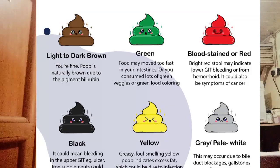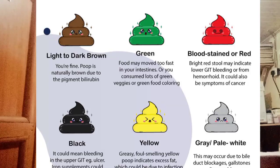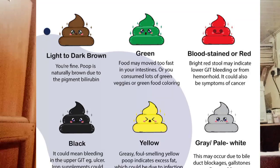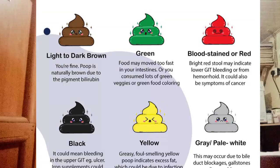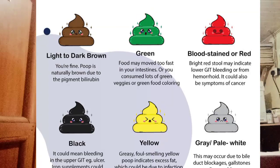Reddish color can occur during bleeding from the lower gastrointestinal tract, or from beef consumption. Black stool occurs in bleeding in the upper GIT — known as melena — or from ingestion of iron or charcoal. Green color can result from ingestion of spinach, greens, or antibiotics.